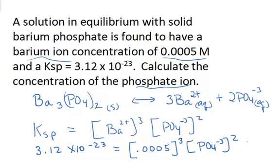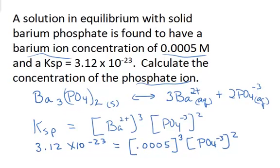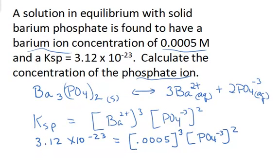We're solving here for the phosphate ion concentration. We don't have to set up the ions in this case as X's because we already know what the barium ion concentration is. So this simplifies the expression quite a bit. But all we need to do is divide the Ksp by 0.0005 cubed and then take the square root to get the phosphate ion concentration.